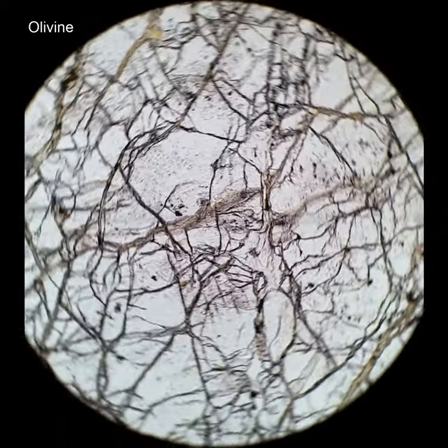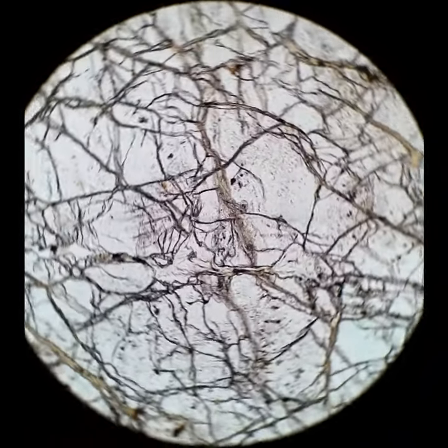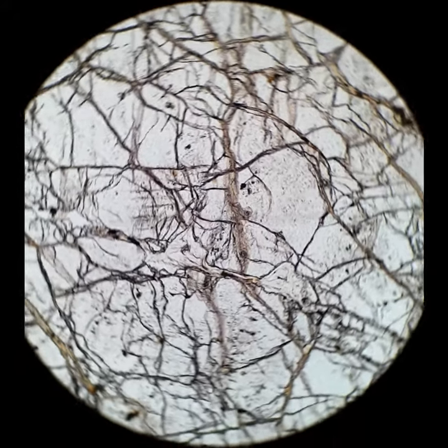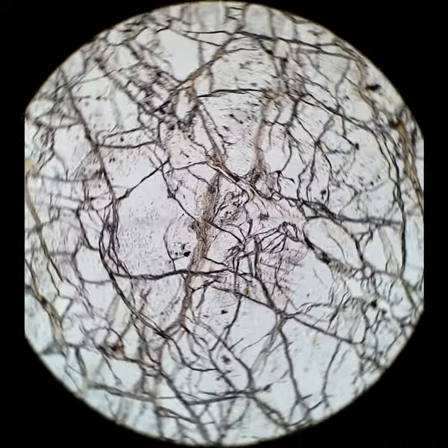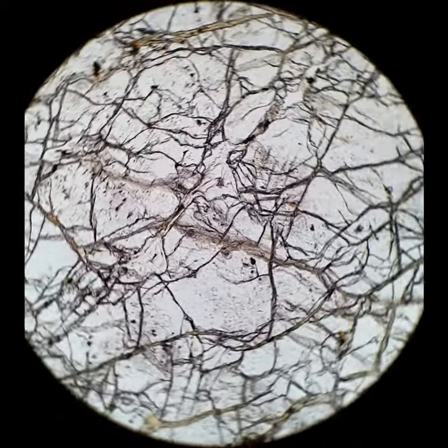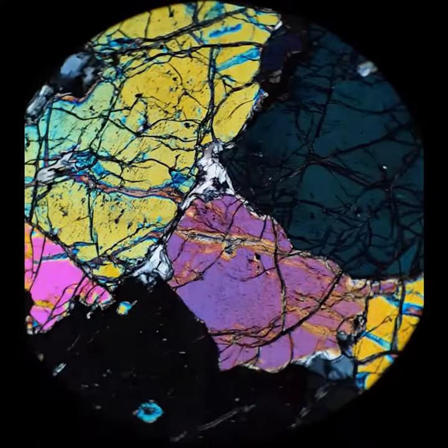I'm pretty sure the entire field of view is made up of olivine crystals. Here you can see they have these curved fractures called arcuate fractures. That is also distinctive of olivine. Pretty typical interference colors. They get up pretty high.